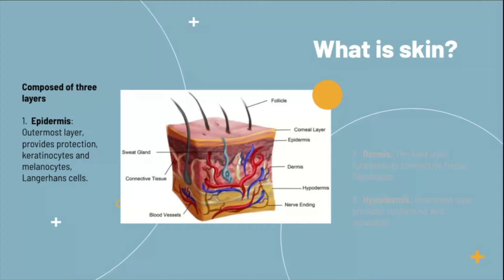This layer also contains melanocytes, which produce melanin and filter ultraviolet radiation, as well as Langerhans cells, which are part of the immune system. So the epidermis is really important.